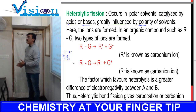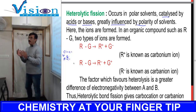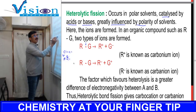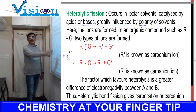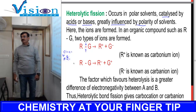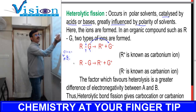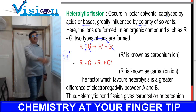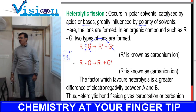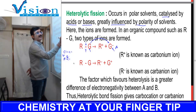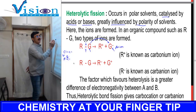When a bond breaks in heterolytic fission, both atoms originally shared one electron each. But when the bond breaks, one of the two atoms takes both electrons and becomes negatively charged — it becomes an anion. The other atom loses its electron.